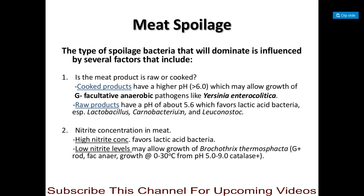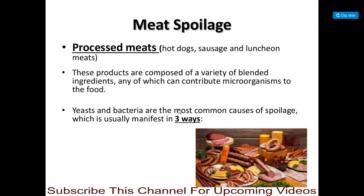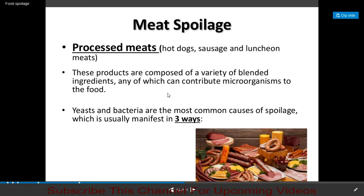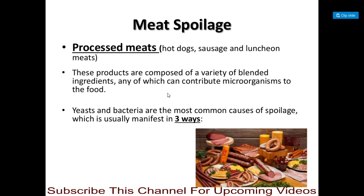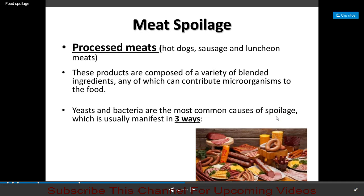High nitrite concentration in meat favors the growth of lactic acid bacteria, while low nitrite levels allow the growth of Brochothrix thermosphacta — a gram-positive, rod-shaped, facultatively anaerobic bacterium that grows at 0–30°C and pH 5–9 and is catalase-positive. In processed meats such as hot dogs, sausages, and luncheon meats, yeast and bacteria are the most common causes of spoilage, which usually manifests in three ways.